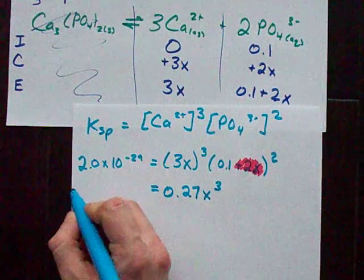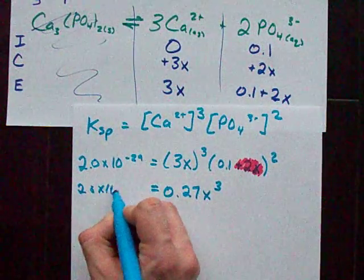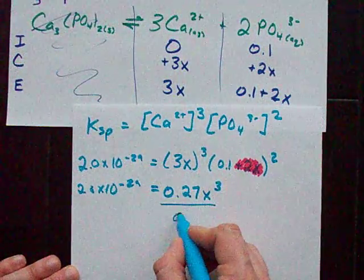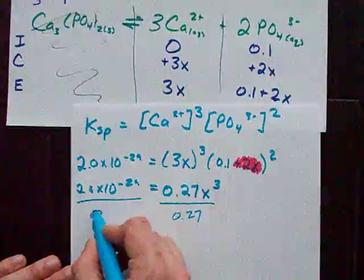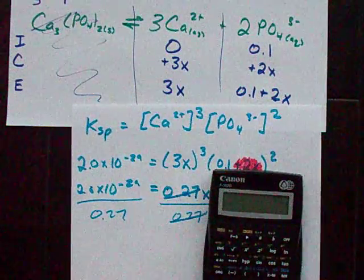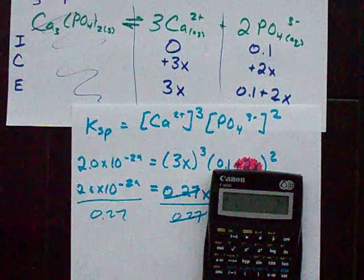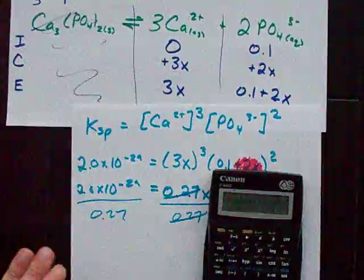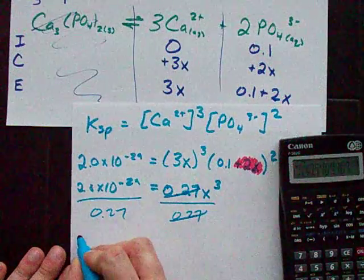Let's solve this equation. 2.0 times 10 to the minus 29 equals 0.27 x cubed. Divide both sides by 0.27. That's 2 times 10 to the minus 29, divide by 0.27. I get 7.4 times 10 to the minus 29.